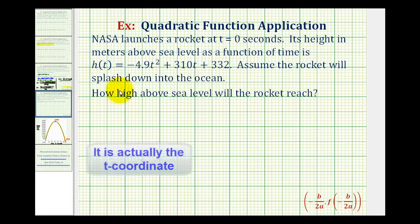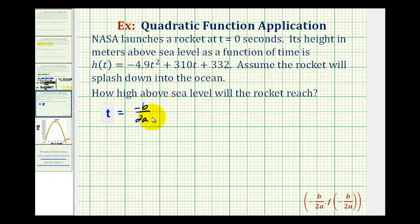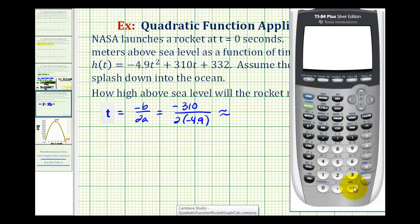So the first step, we need to determine the x coordinate of our vertex, which is going to be equal to -b over 2a. So we'll have -310 divided by 2 times -4.9. We'll do this on the calculator. We do need parentheses around this product. So 2 times -4.9. So we'll say it's approximately 31.63.